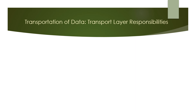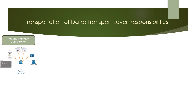The transport layer has many responsibilities. The first responsibility is tracking individual conversations. Each set of data flowing between a source application and a destination application is known as a conversation and is tracked separately. It is the responsibility of the transport layer to maintain and track these multiple conversations. A host may have multiple applications communicating across the network simultaneously. Most networks have a limitation on the amount of data that can be included in a single packet, so data must be divided into manageable pieces.